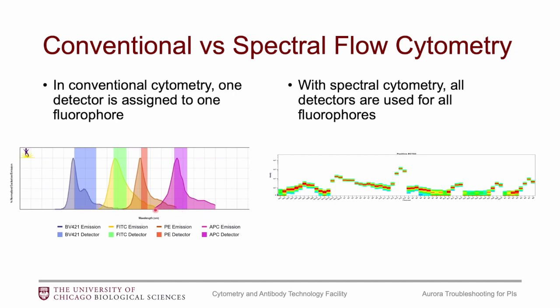You can see that we're not actually picking up the full emission spectra for each fluorophore. With spectral cytometry, we utilize all of the detectors in the instrument to look at all of the fluorophores, so that we define the fluorophores by a distinct signature. Another big difference is the number of detectors — our spectral cytometer has 64 detectors, whereas our conventional cytometers, for example the Fortessa X20, has 18 detectors.